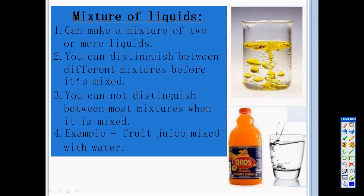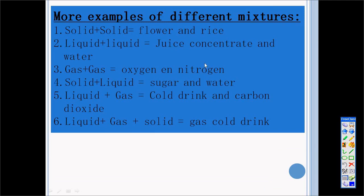Different kinds of mixtures that we also see here. These examples of different kinds of mixtures. Solids with solids like flour and rice. We got liquids with liquids like juice concentrate and water. But we can also mix gases and gases with one another like oxygen and nitrogen. We can also mix a solid with a liquid like sugar and water. And then we can also mix a liquid with a gas like cold drink and carbon dioxide. And then also we can mix a liquid and a gas and a solid with one another. So all three phases of matter is referred to here in this kind of mixture.